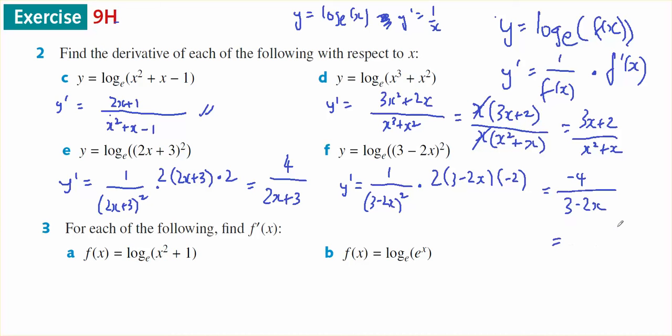You could rewrite that as 4 on top of 2x minus 3 by taking out a common factor of negative 1 from both the top and the bottom. I can't get my minus 3 happening down there. There is a minus 3. Doesn't seem to want to write it. Yes, it does. OK.